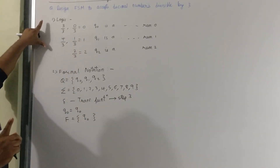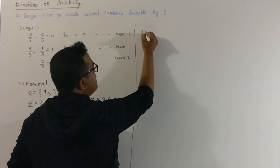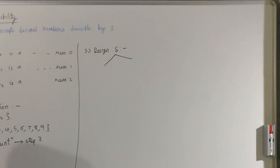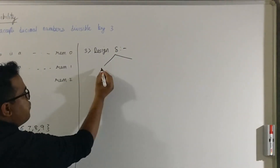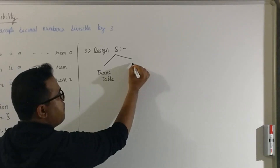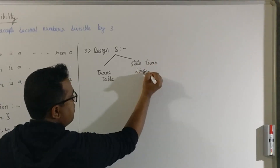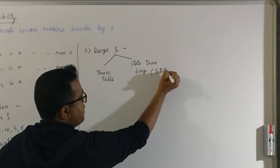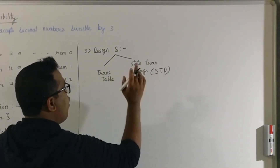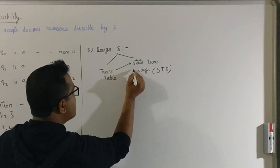So we completed two steps: logic and formal notations. Now the third step is designing delta. Delta can be designed in two ways: the first is a transition table, and the second is a state transition diagram, abbreviated as STD. Once we have a table we can get the diagram, and vice versa. For all problems, I am going to design the transition table, as it is easier than directly designing the diagram.